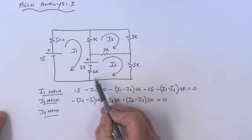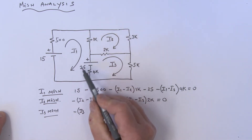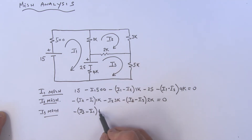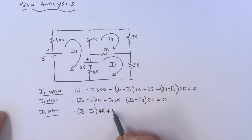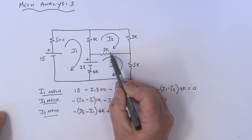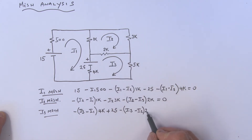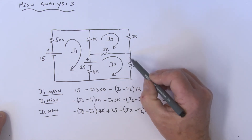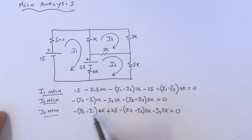Last one: the I3 mesh equation. Starting here, going in the I3 direction, that's a minus bracket (I3 minus I1) multiplied by 4k. We've got a voltage source here - going from a minus to a plus - so that becomes a plus 25. Then coming across this component in the I3 direction: a minus, open up a bracket (I3 minus I2) multiplied by the 2k resistor. Finally, the 5k: a minus I3 times 5k, all equal to 0.